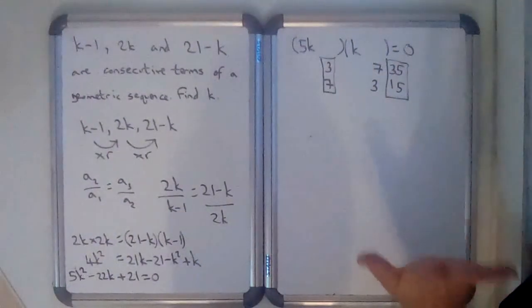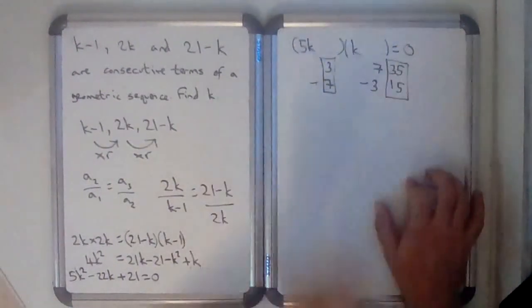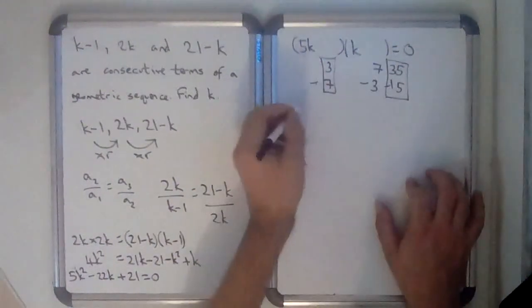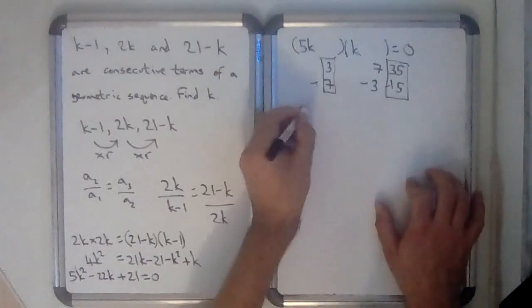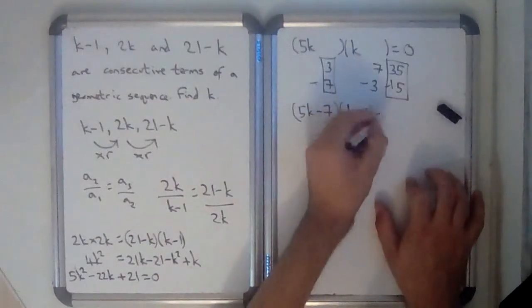So if these were both negative, minus 7 minus 15 does give me minus 22. So I reckon it's 5k minus 7, k minus 3 equals 0.